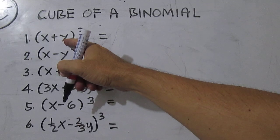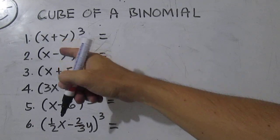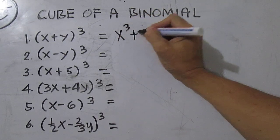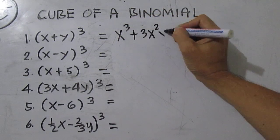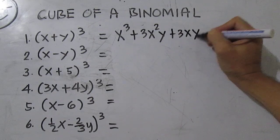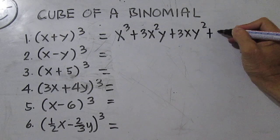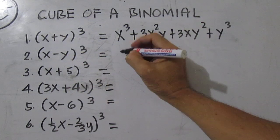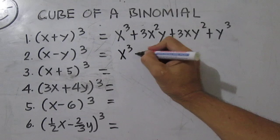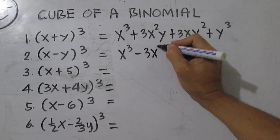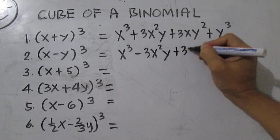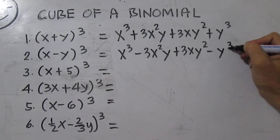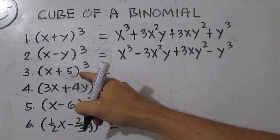And the cube of the second term. Number 1 is x cubed plus 3x squared y plus 3xy squared plus y cubed. Number 2, you have x cubed minus 3x squared y plus 3xy squared minus y cubed.